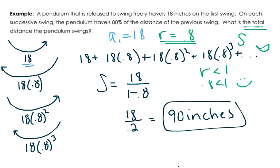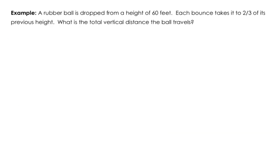Let's try one more. A rubber ball is dropped from a height of 60 feet. Each bounce takes it two-thirds of its previous height. I mean, so think about when you bounce a ball. At the very end, it just kind of goes like da-da-da-da-da-da. So you can't really count those bounces. So again, we're going to treat this as an infinite problem.